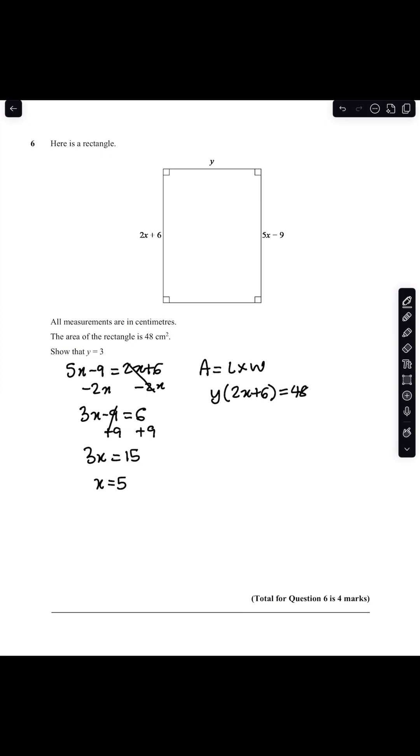I can substitute my value of x into this equation, so y multiplied by 2 times 5 plus 6 equals 48. Remember 2 times 5 is 10, 10 plus 6 is 16.